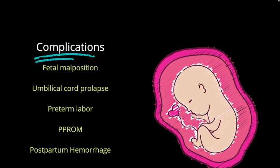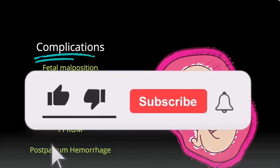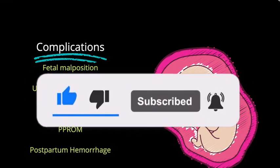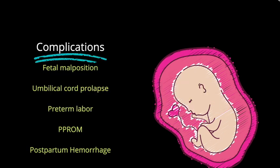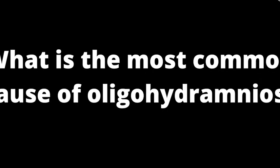Looking at the first two complications, fetal malposition and umbilical cord issues were also listed as complications for oligohydramnios. So remember that fetal malposition and umbilical cord complications are shared by both conditions. The most common cause of polyhydramnios is idiopathic, while the most common cause of oligohydramnios is rupture of membranes.